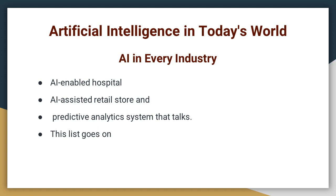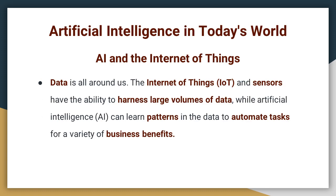Artificial intelligence has made inroads into our life and found many applications. For instance, there are AI-enabled hospitals where they help both patients and doctors to make informed decisions. AI-assisted retail stores help both the shopkeeper and the buyer to make very good choices of available items. Predictive analytics systems are capable of talking with and helping customers. The domain of artificial intelligence is also working with the Internet of Things — data is all around us, and IoT sensors have the ability to harness large volumes of data, while AI can learn patterns in that data to automate tasks for a variety of business benefits.